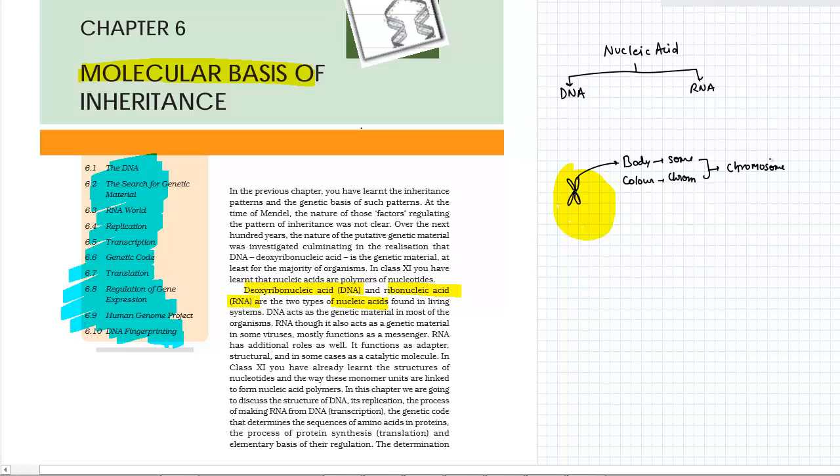This chapter is all about the molecular details that decide your inheritance. Inheritance means you possess some traits—either you have blue eyes or black or brown eyes. That particular trait goes into the next generation, into your progeny. That study is known as genetics, and inheritance is the passing of characters from one generation to the next.